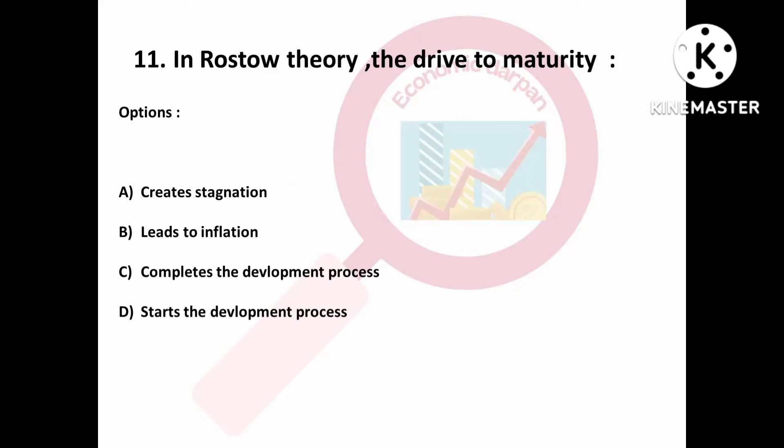Question number eleven is: in Rostow's theory, the drive to maturity — Option A: creates stagnation; Option B: leads to inflation; Option C: completes the development process; Option D: starts the development process. The drive to maturity completes the development process.